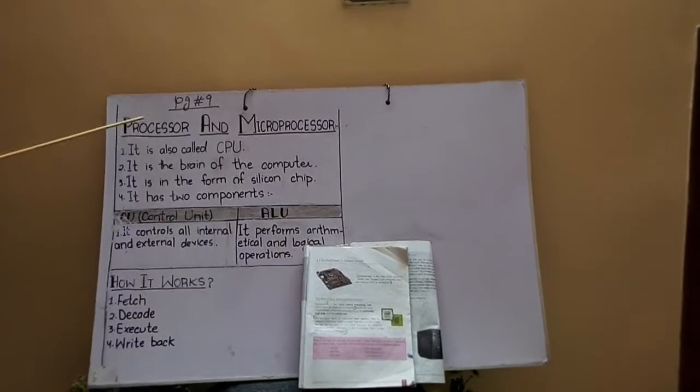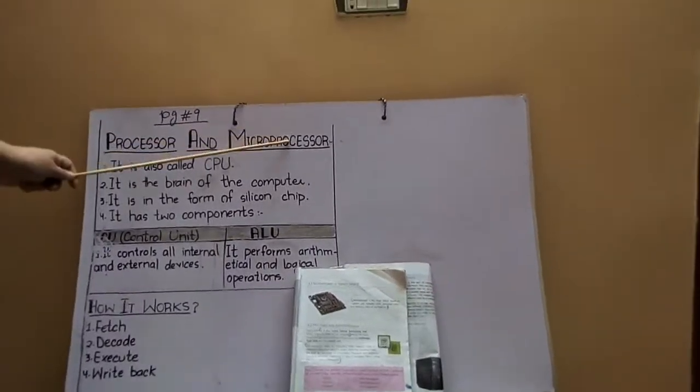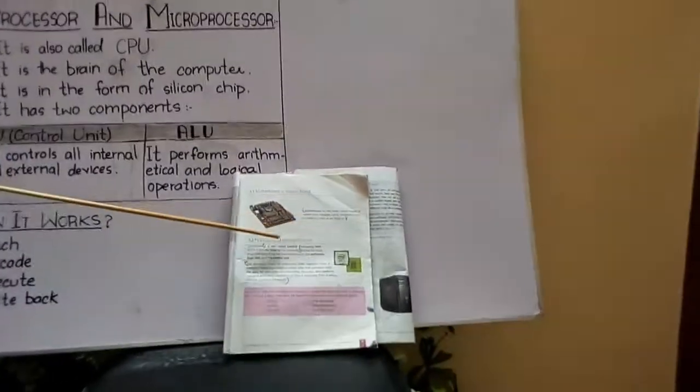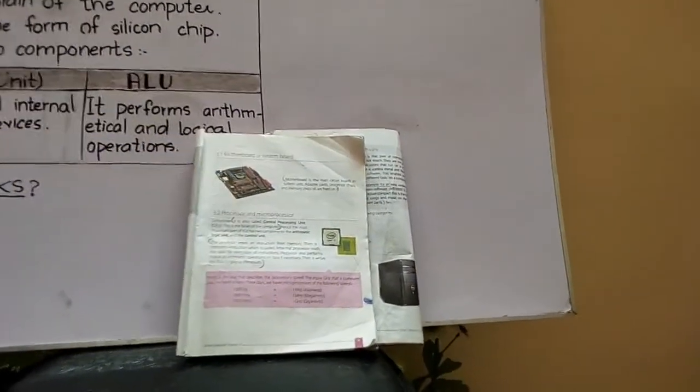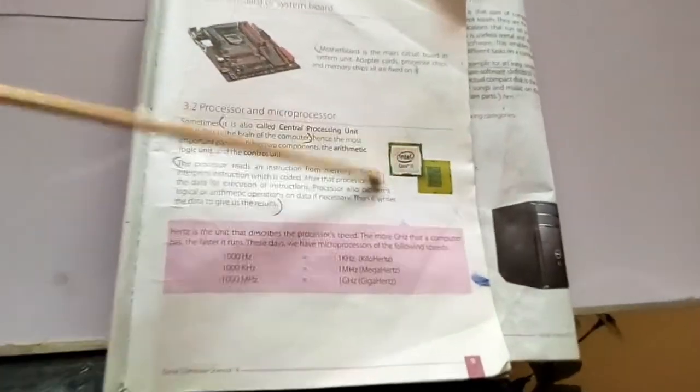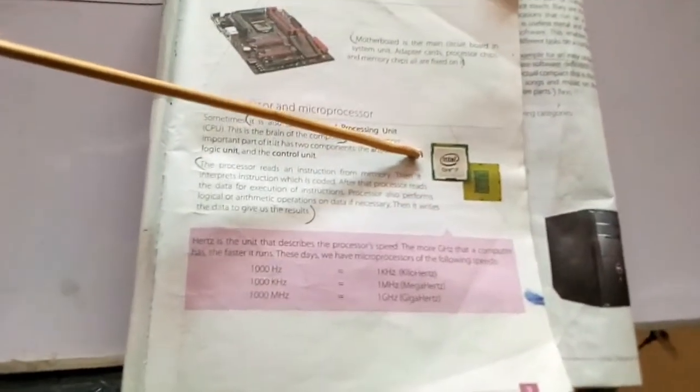Now, I'll explain processor and microprocessor. This topic is on page number 9 in your book. The introduction: the first processor was Intel 2004. It was invented by Intel company. This is the picture of the processor.